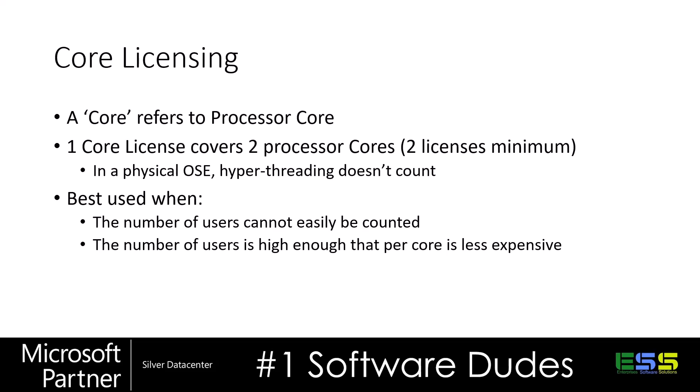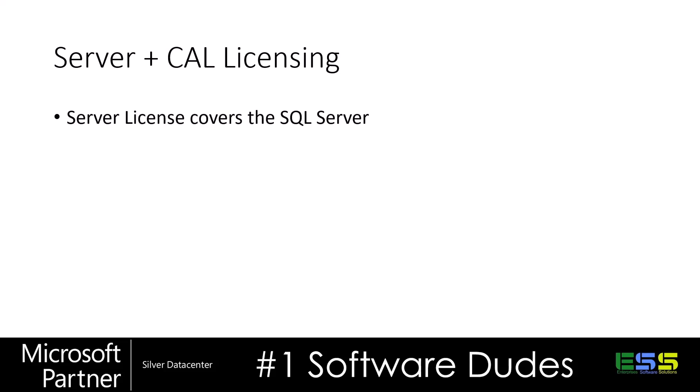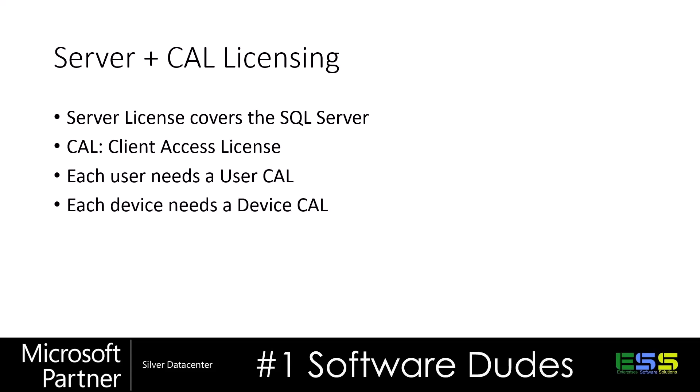There will be instances where you don't have very many users, so it makes more sense to do a Server CAL model. Microsoft covers edge cases at their licensing link. In the Server CAL model, the server license covers the SQL Server itself, and each CAL — or client access license — covers individual users or devices. A user CAL is assigned to a user, entitling them to access SQL Server from any device. A device CAL licenses a specific device to be accessed by any user. If you have a lot of users and few devices, license the devices; if you have many users with many devices, license the users.